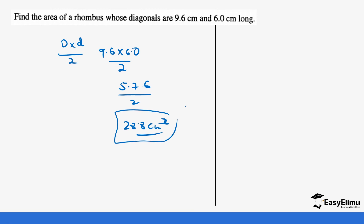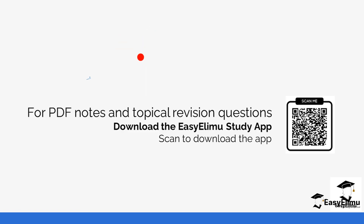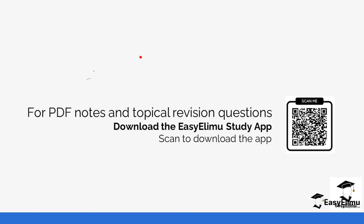That's how we tackle those questions. Remember, it may not always be straightforward — you could be given the area and one diagonal and asked to find the other, or given an angle and a side to find another measurement. Either way, the formula is the same. Make sure you remember both formulas to make your work easier. Check out more revision questions in the app and more notes. See you in the next lesson.